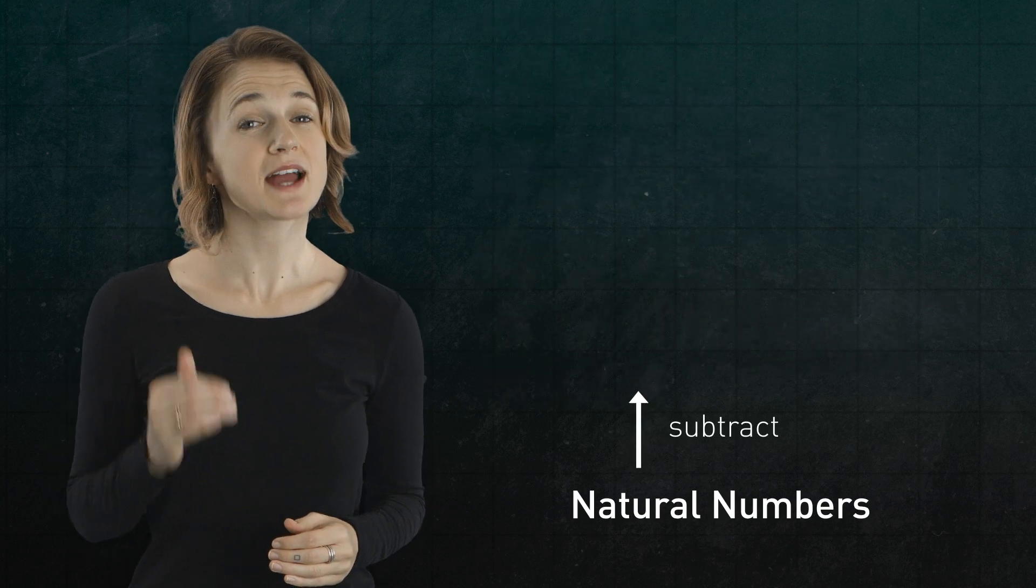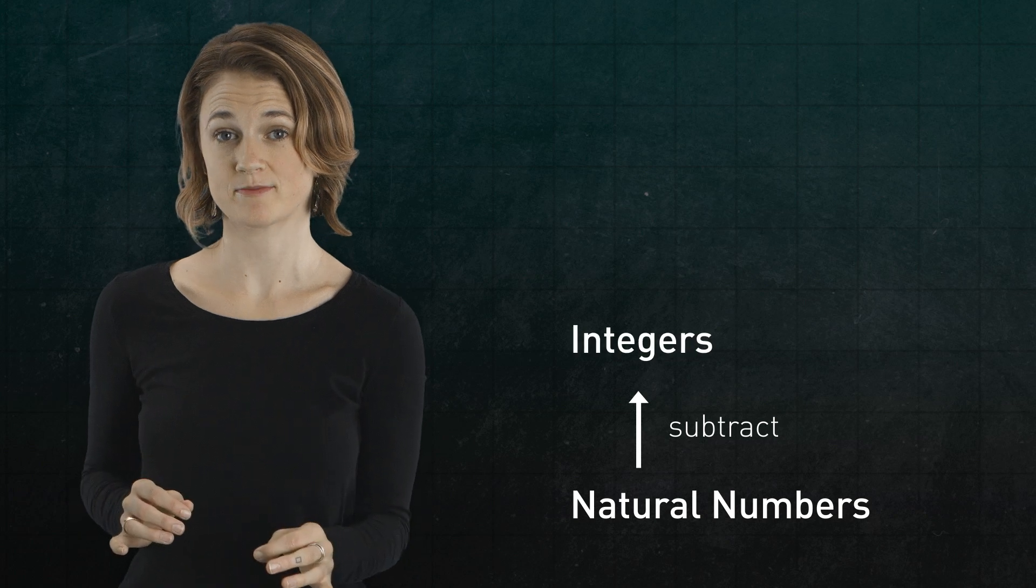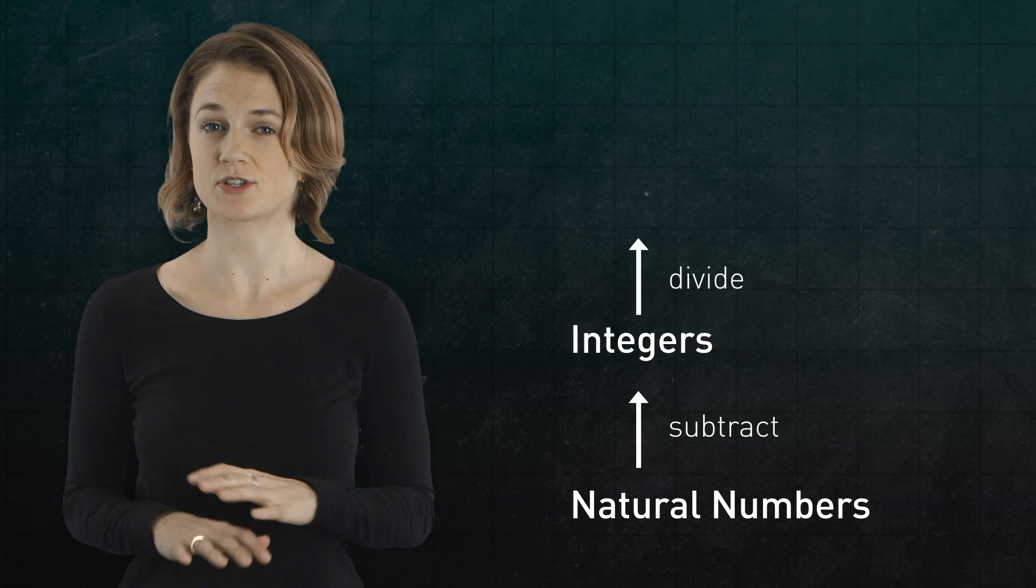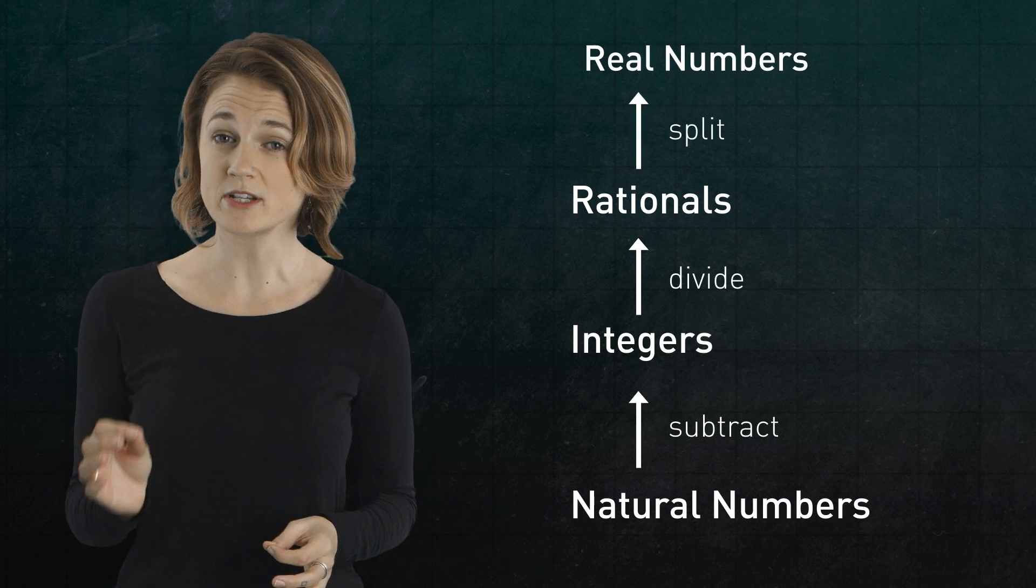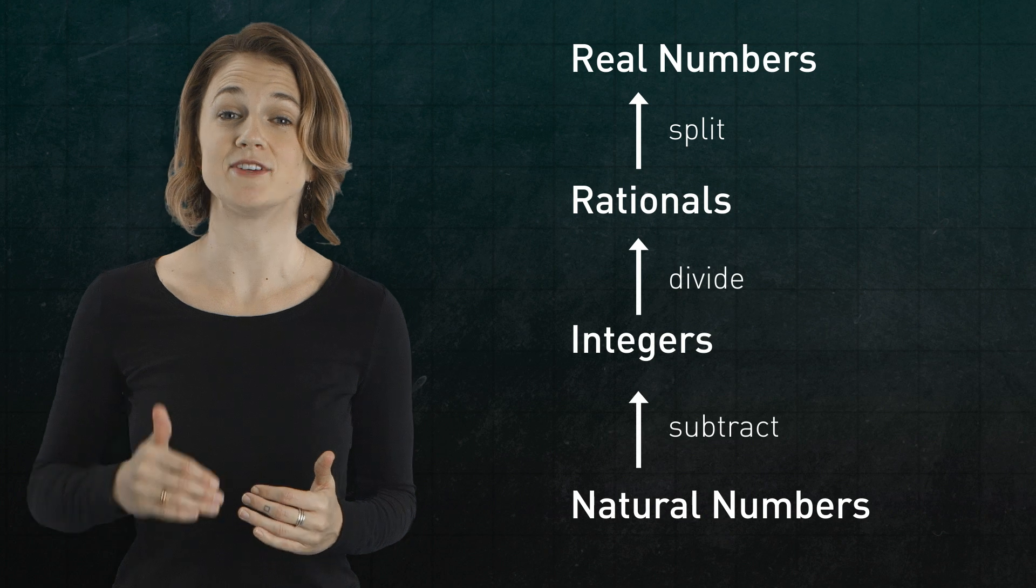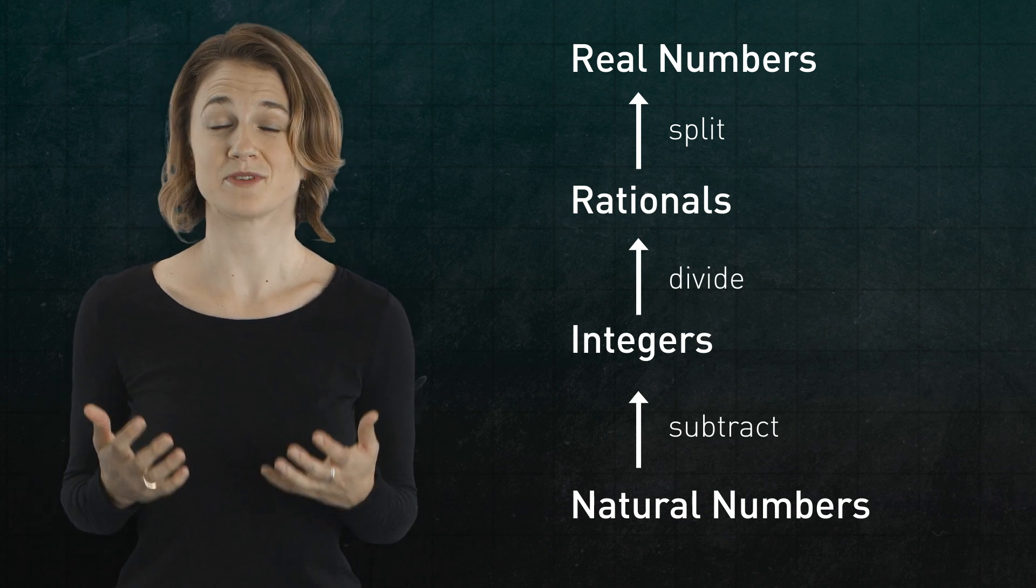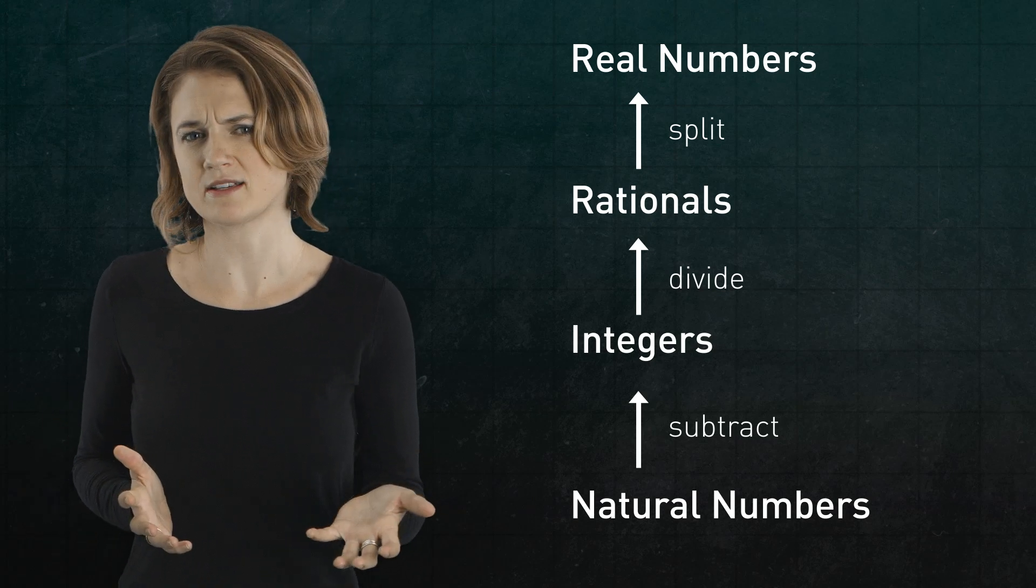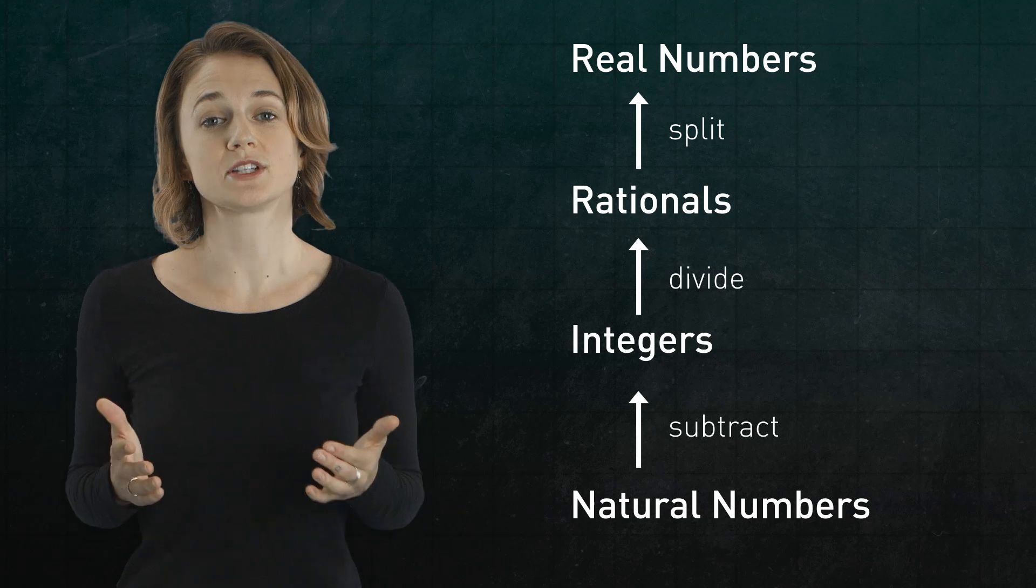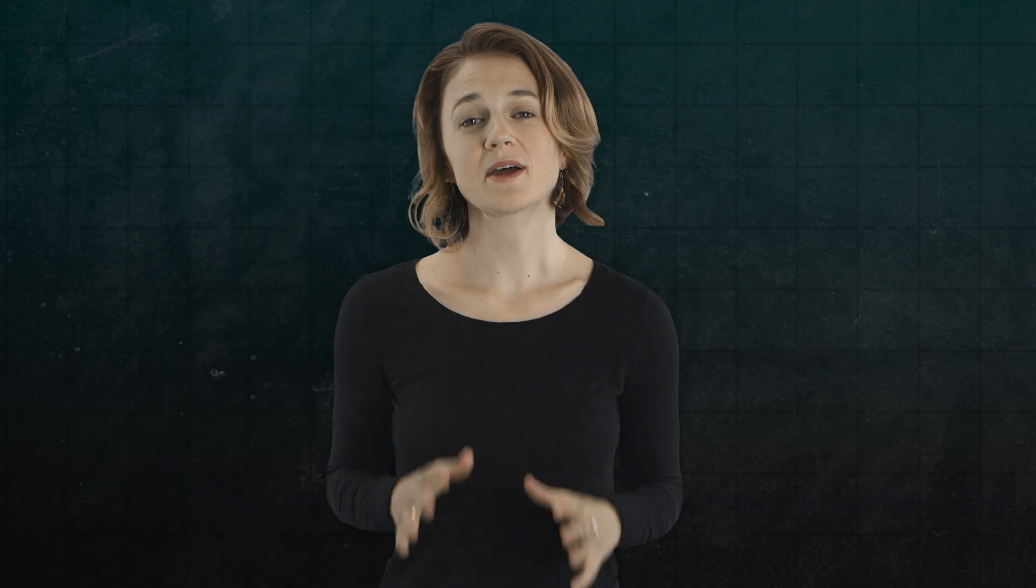Starting with the natural numbers, we subtracted them in all possible ways to get the integers. Then we divided the integers in all possible ways to get the rationals. Then we split the rationals in all possible ways to get the real numbers. The structure and properties of each type of number can be defined in terms of the previous type. In this way, all possible statements about the real numbers, like pi is less than e squared, can be reduced to statements about natural numbers. Mathematical objects and their properties, the things we prove theorems about, are defined in terms of other mathematical objects and their properties. Math is built out of simpler math, hence the pyramid idea.